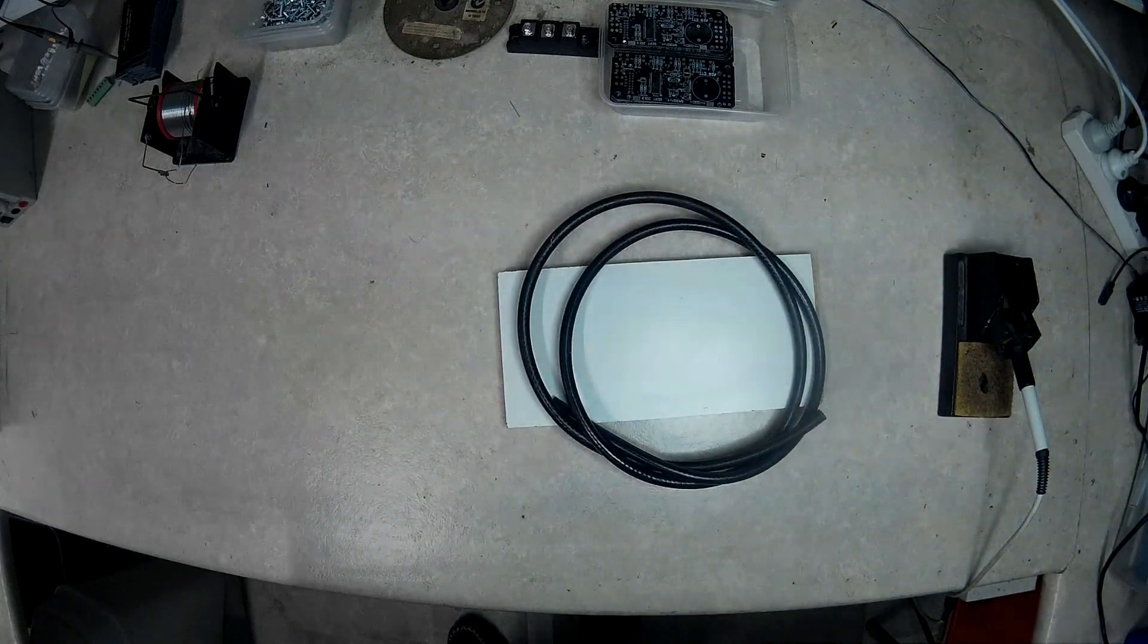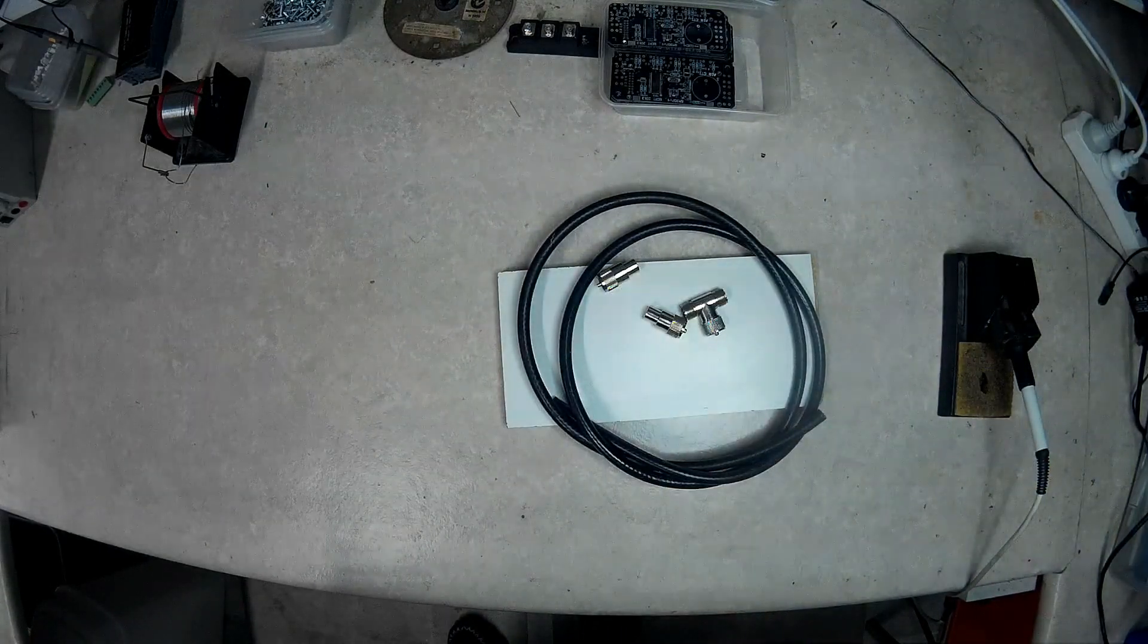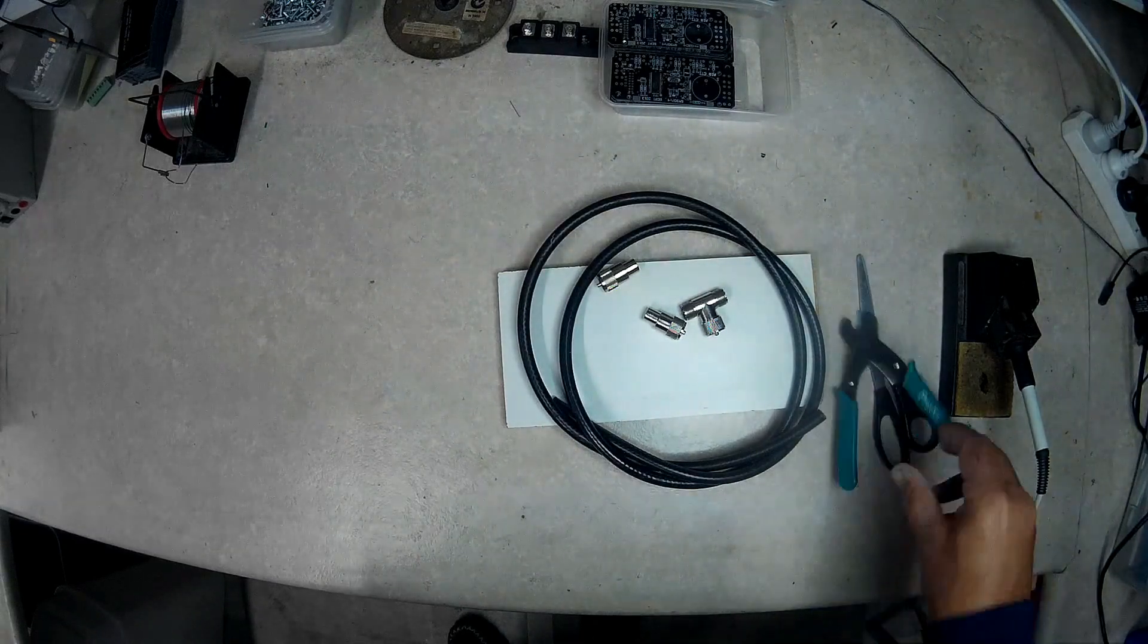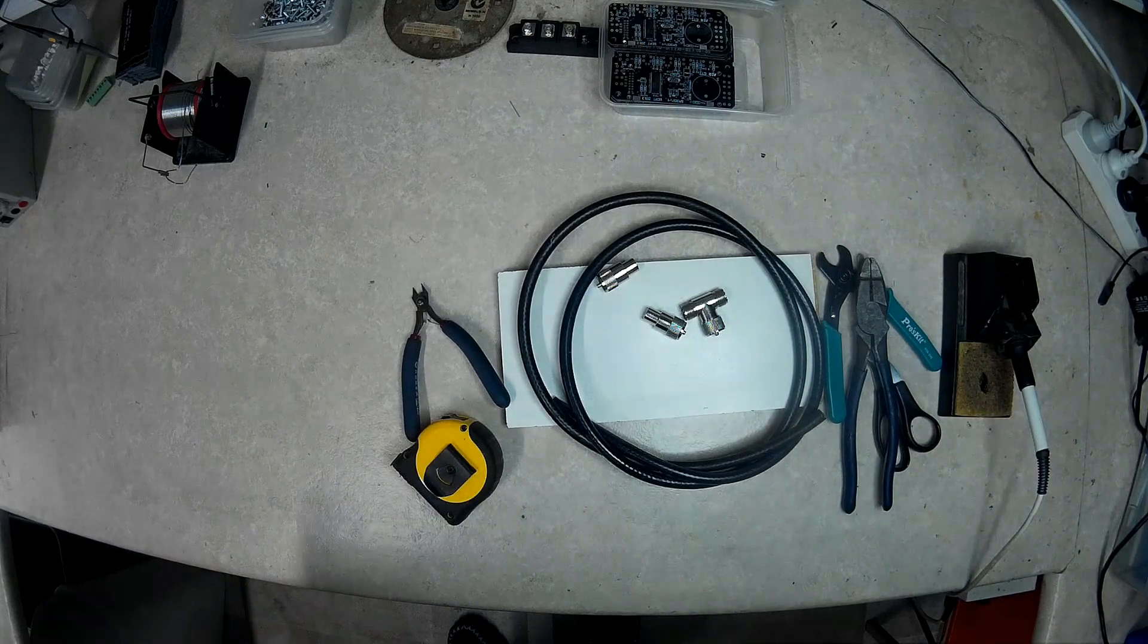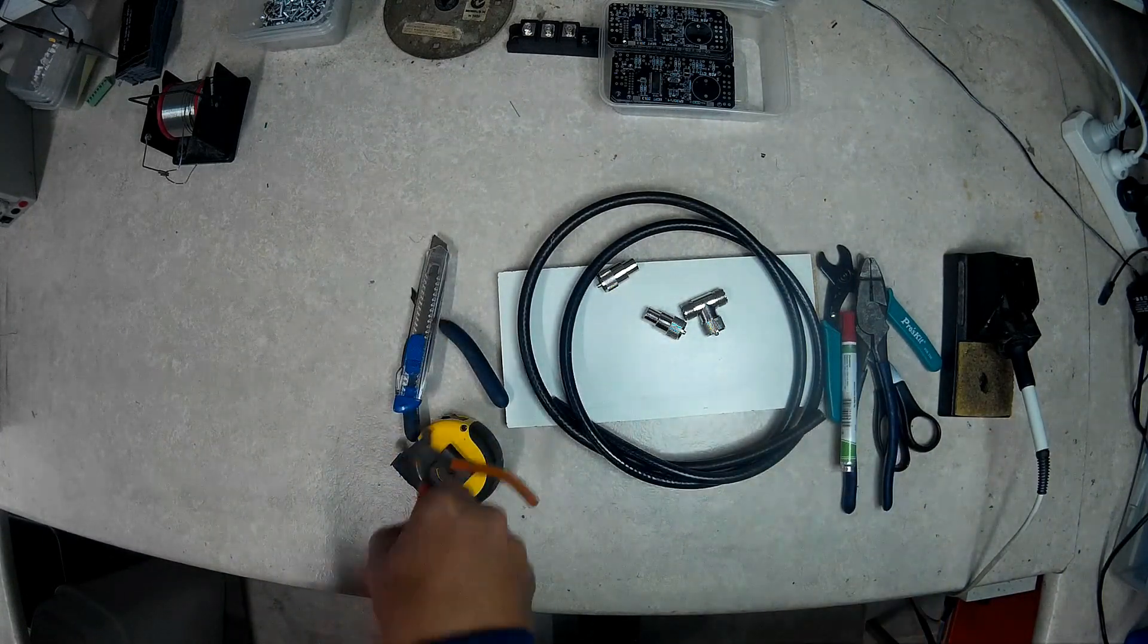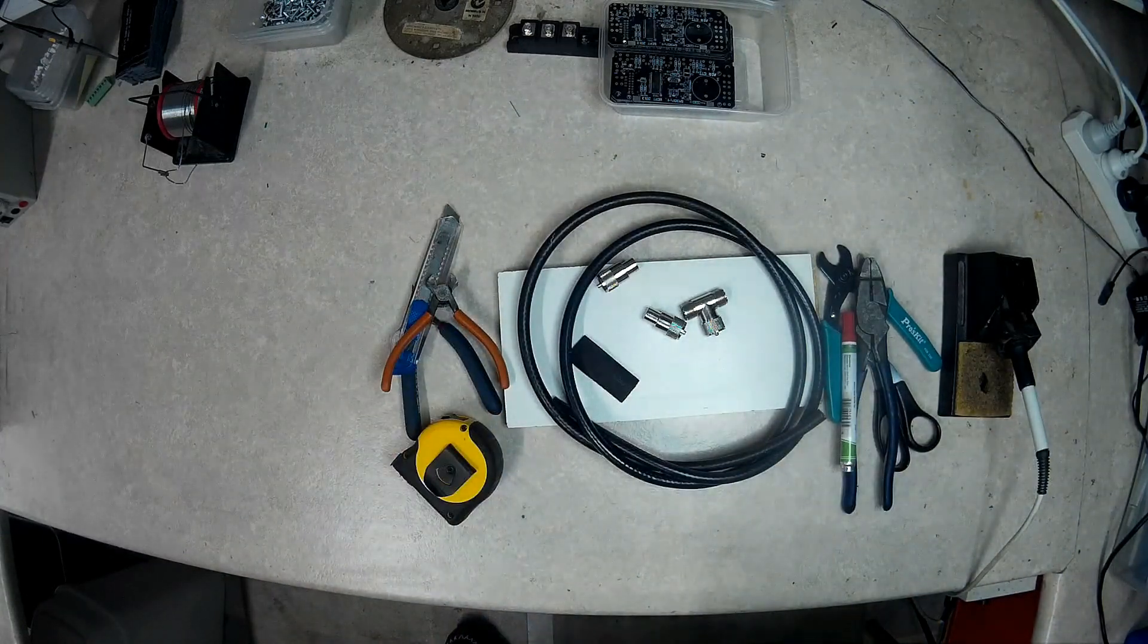We need a short section of RG8 or RG213 coax, a couple of PL259 plugs, a T-piece adapter, some heat shrink tubing and a few hand tools to put it all together.